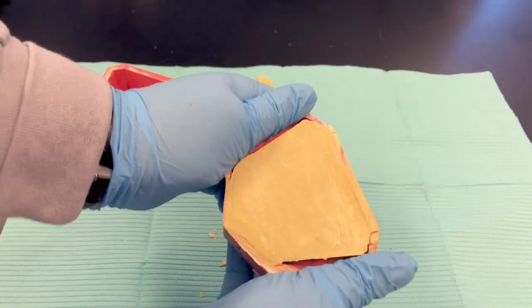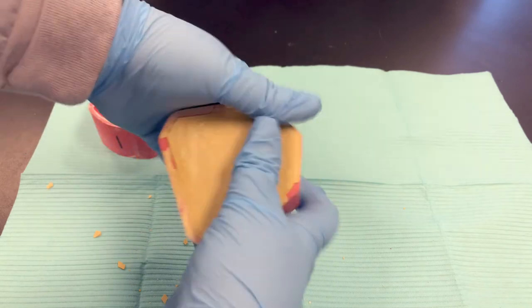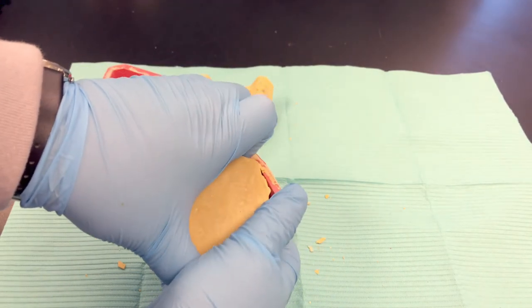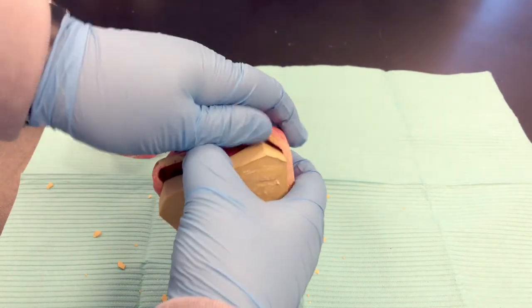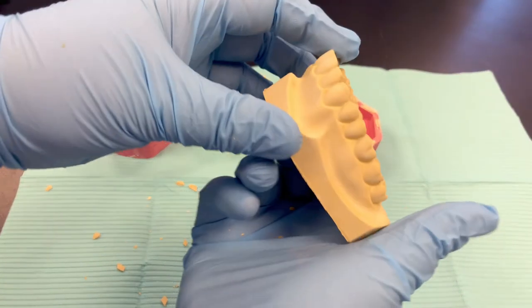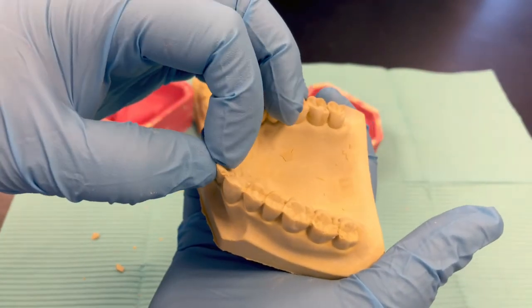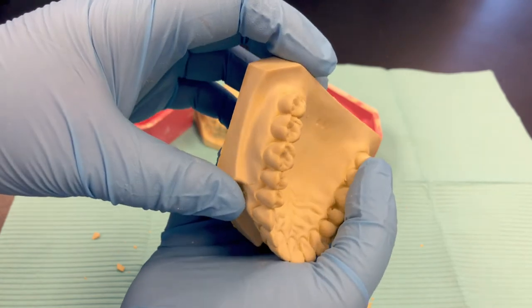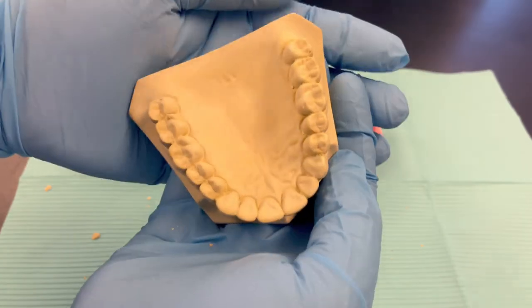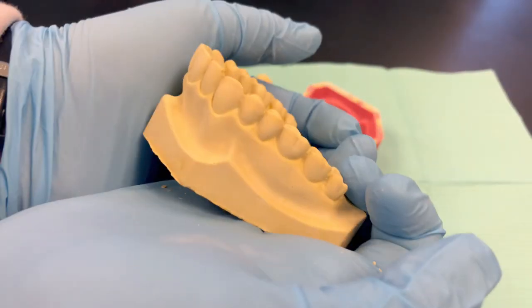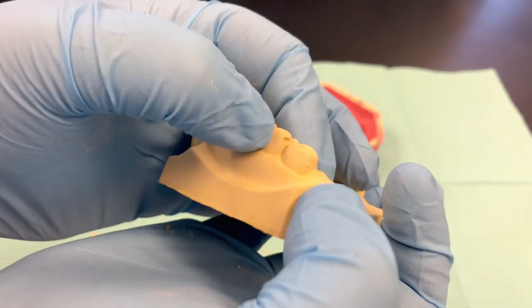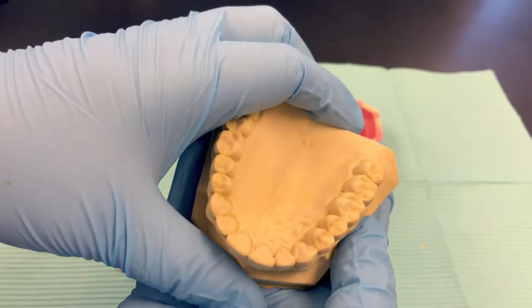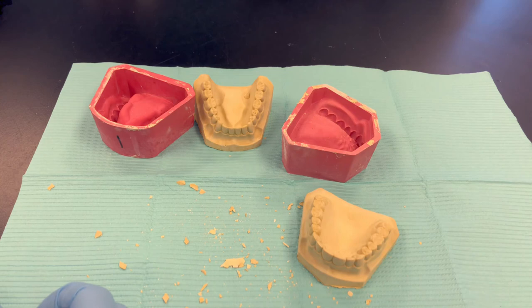To separate, flex the edges and then push up from the bottom. Take a look at this one. Bubble up there. Again, bubbles on the base, but the base does not matter as much as the teeth. So this one looks pretty good. Another bubble back here. So these are pretty good study models. A few bubbles on each one, but not enough to affect anything that I might make for this patient.